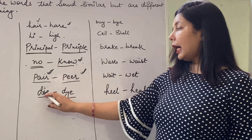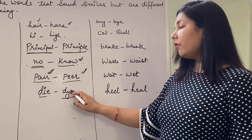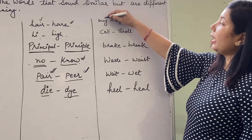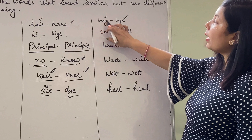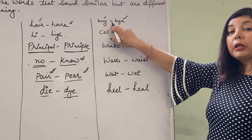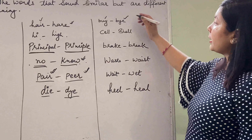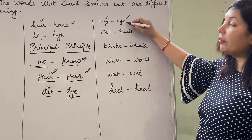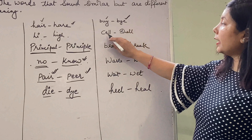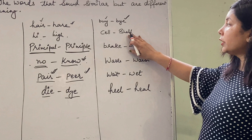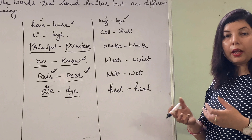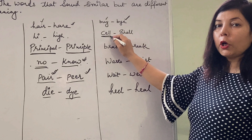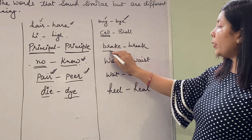Die and dye. 'Die' ka matlab marna (to die). 'Dye' yani koi color (to dye/color). Now 'buy' and 'bye'. 'Buy' ka matlab koi cheez aap purchase kar rahe ho, toh aap 'buy' bolte hain. Jab aap kisi se milke vaapas ja rahe ho, toh aap 'bye bye' bolte hain. Then 'cell' and 'shell'. Shell is the outer covering of something, whereas cell is the basic unit of life of which our body is made up of.